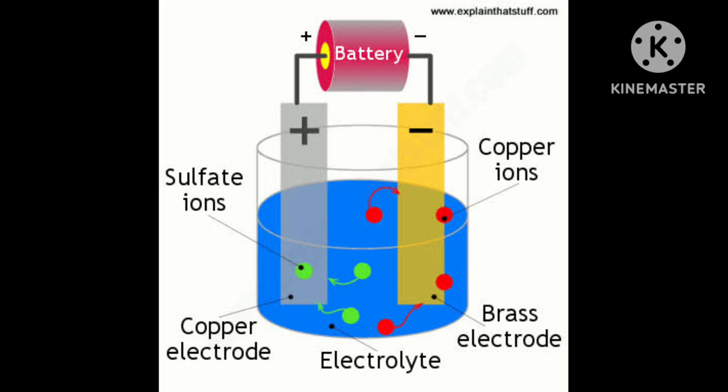Electroplating being an electrolysis process, the amount of metal getting deposited and the amount of current passing through the electrolytic cell are related to each other by the laws of electrolysis, namely Faraday's laws. There are two laws: Faraday's first law of electrolysis and Faraday's second law of electrolysis. These two laws are used during electrolysis.